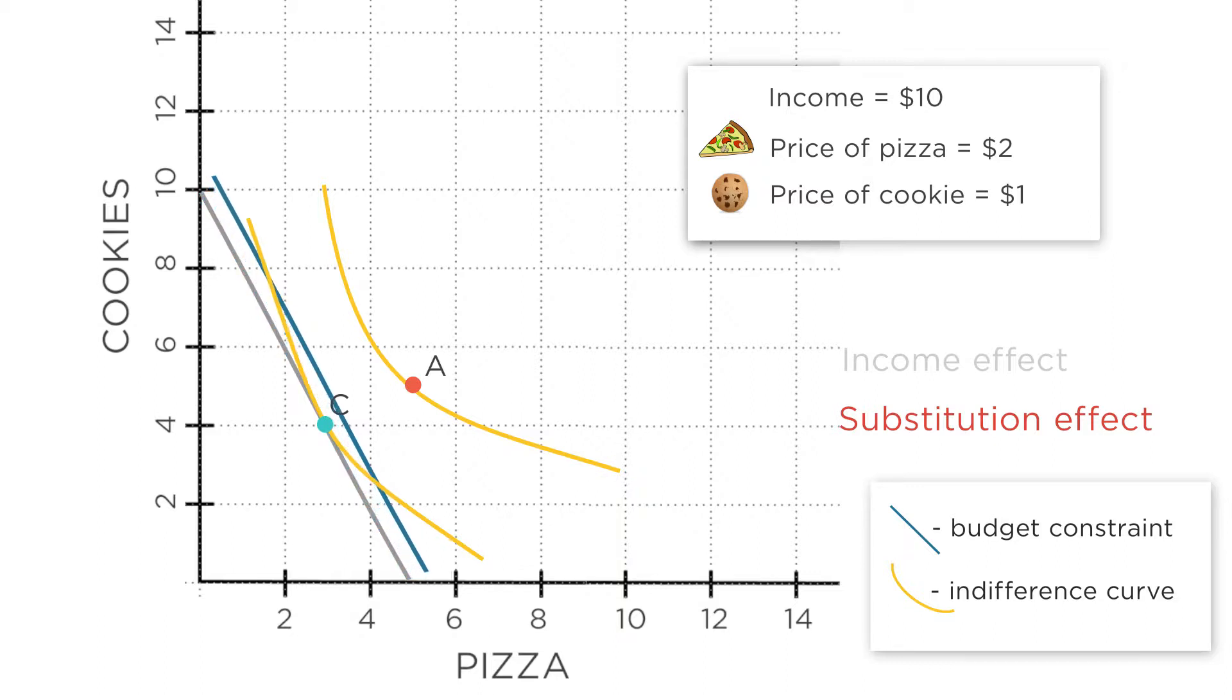To see this substitution effect, draw an imaginary budget constraint that meets two conditions. It's parallel to the new budget constraint, so it reflects the new higher price of pizza, and it's tangent to the original indifference curve, so you're keeping utility constant.